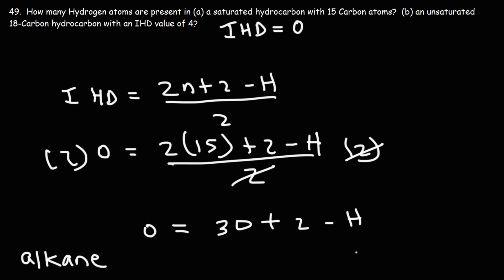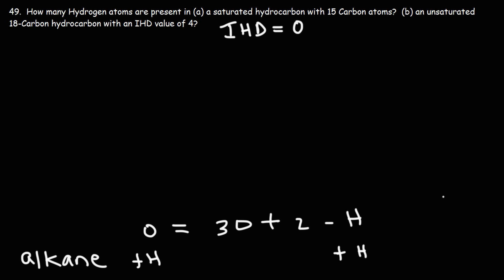So we have this. I'm going to add H to both sides. And then we have 30 plus 2, which is 32. So this is going to be the answer. 32 hydrogen atoms.